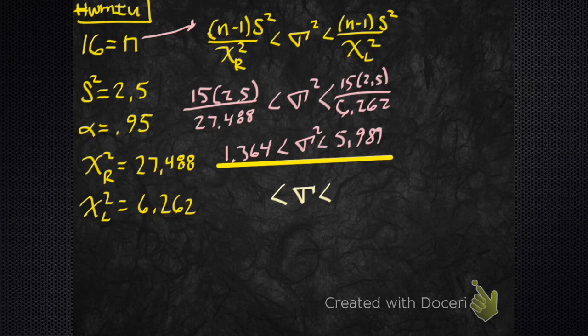So now you're doing standard deviation? Now I'm doing standard deviation. I just had the variance, so we take the square root of each side. 1.168.